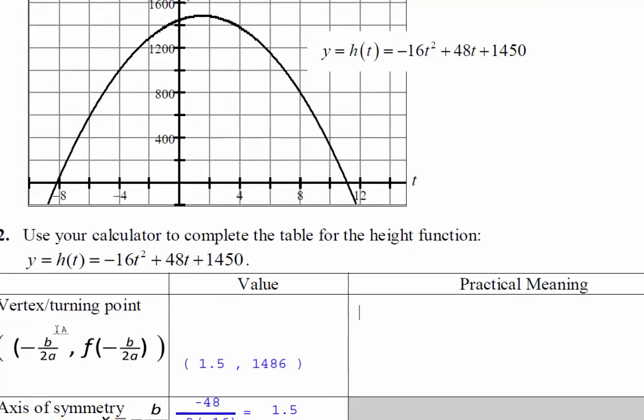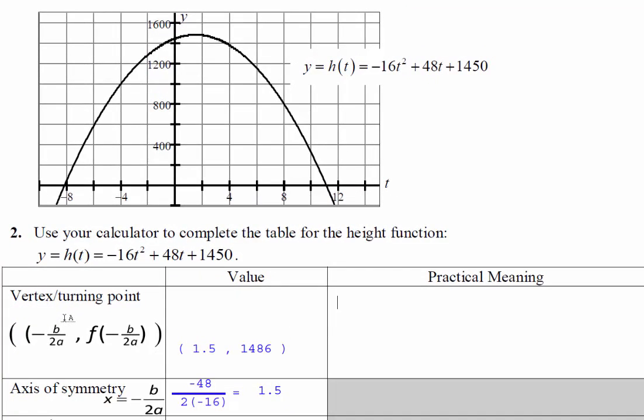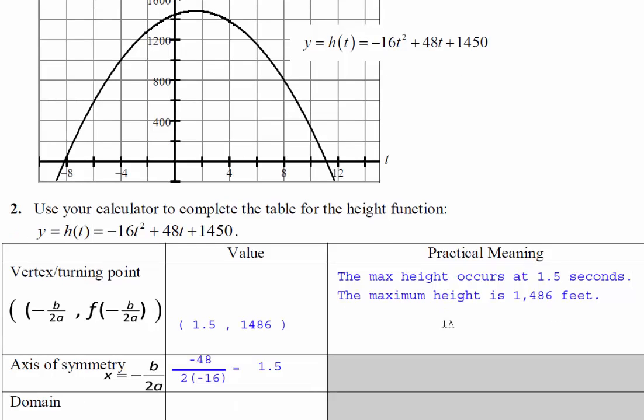You can even say, since this is the vertex, the maximum height occurs at 1.5 seconds, and that height is 1,486 feet. Okay, so the max height occurs at 1.5 seconds, the maximum height is 1,486 feet. So that's our practical meaning, right?